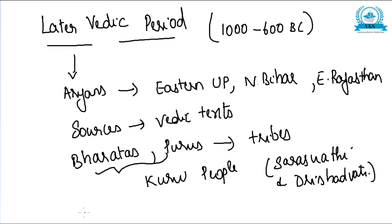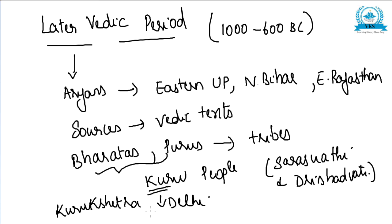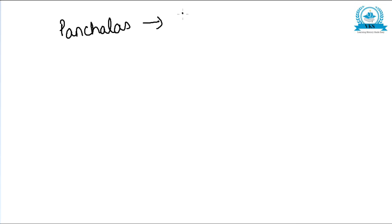Soon the Kurus occupied Delhi and the upper reaches of the Doab. The area they occupied came to be called Kurukshetra, meaning the land of the Kurus. After the Kurus, the Panchalas were also a composite class whose territory roughly corresponds to modern-day Bareilly, Badaun, Farrukhabad and adjoining districts.